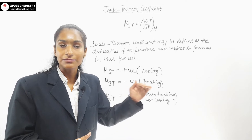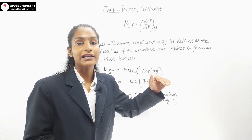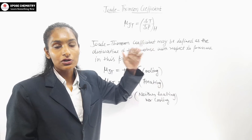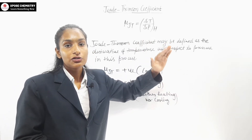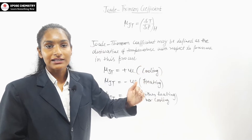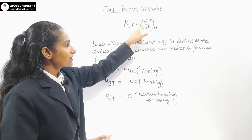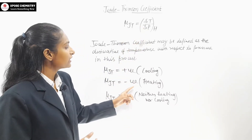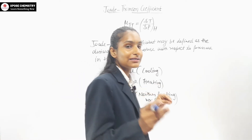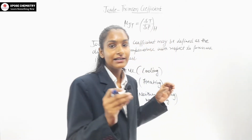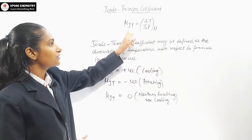In the cooling case, the temperature decreases, so the change in temperature is negative. Negative divided by negative gives a positive μJT — so cooling corresponds to positive μJT. In the heating case, temperature increases — positive change in temperature divided by negative change in pressure gives negative μJT. So heating corresponds to negative μJT. If there is no temperature change — neither heating nor cooling — the change in temperature is zero, and therefore μJT will be zero.